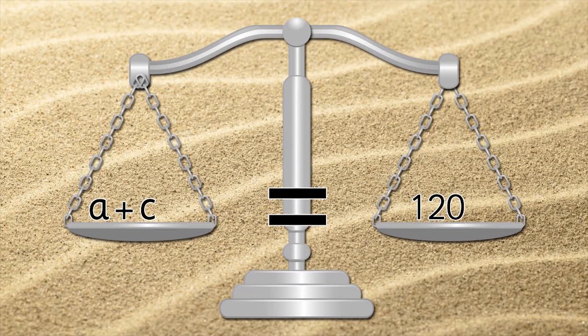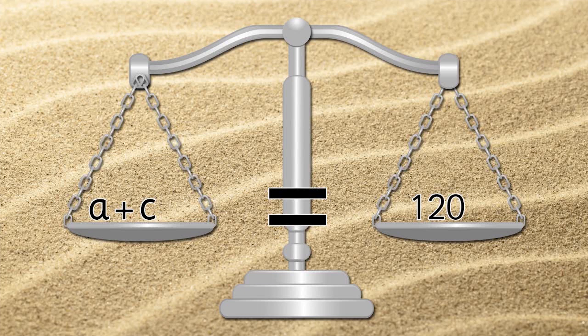Let's look at the scales. A plus C equals 120. First we'll swap A for 40, which is the number of adults. 40 plus C equals 120.